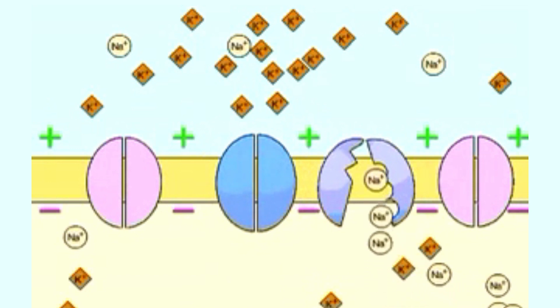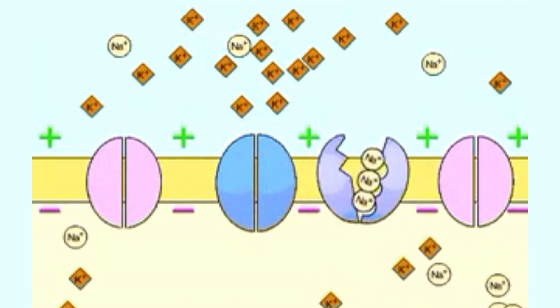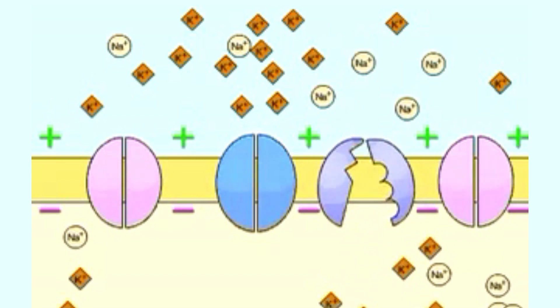Meanwhile, the sodium-potassium pump has been shuttling sodium ions out and potassium ions in, reestablishing the resting potential distribution of sodium and potassium ions.